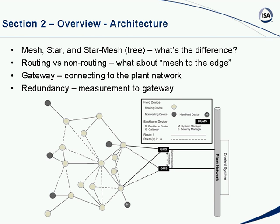The architecture is important because it drives many of the compromises we have to make. The architectures supported under the principles of operation are mesh, star, or star-mesh — which is sometimes called a tree. We'll go through the differences, talk about routing versus non-routing nodes, what mesh-to-the-edge means, the role of the gateway, and what redundancy means.